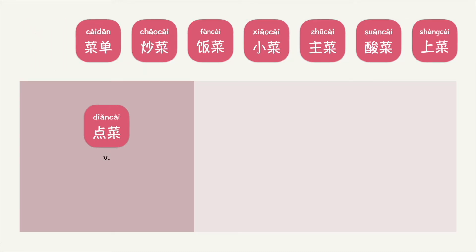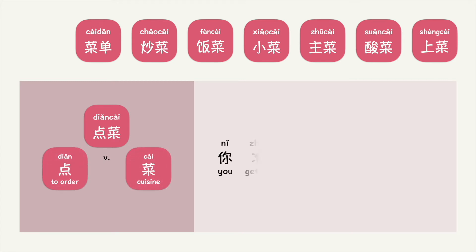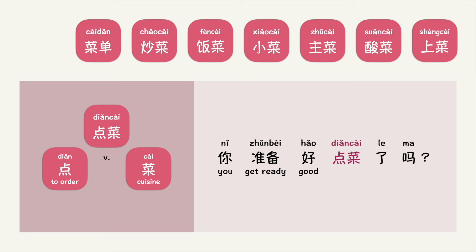点菜 is a verb. 点 means to order, 菜 means cuisine. Put into context, you can say: 你准备好点菜了吗? — To order cuisine. What do you think 点菜 means? 点菜 means to order dishes in a restaurant.